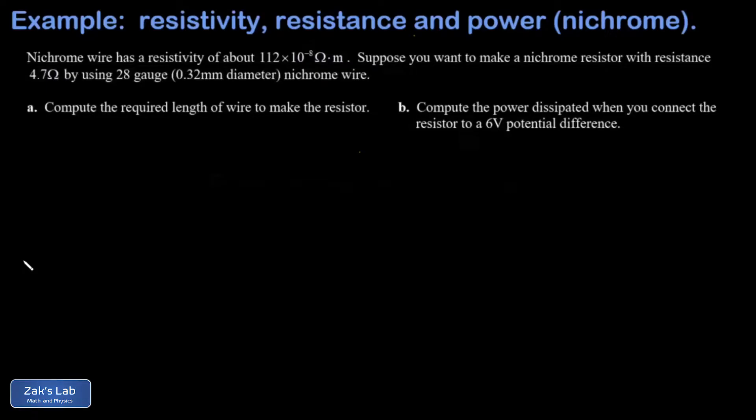In this video, we're designing a resistor given the resistivity of the material, which is nichrome wire in this case. What we want to do is cut a length of nichrome wire that's going to give us a 4.7 ohm resistor.